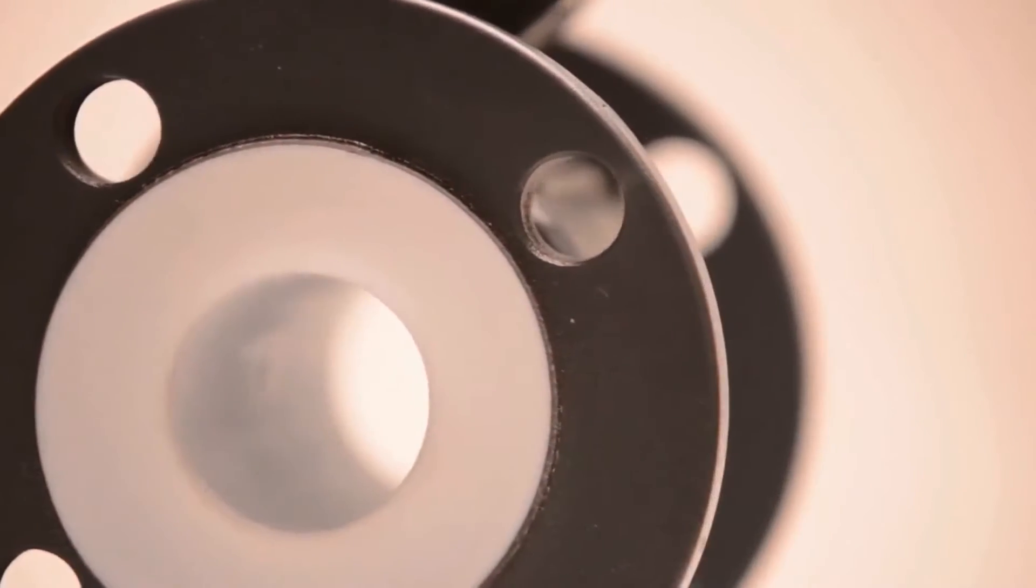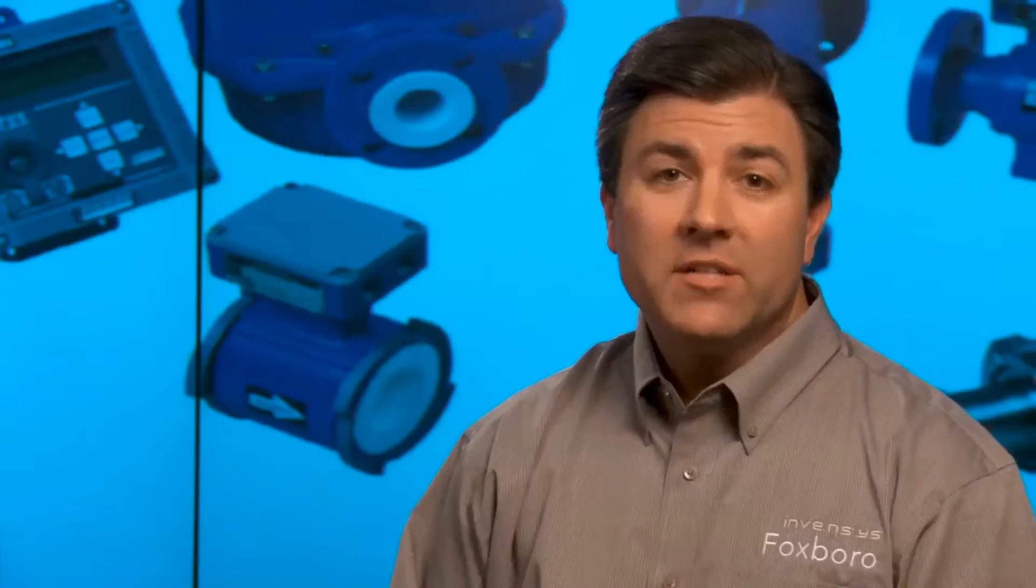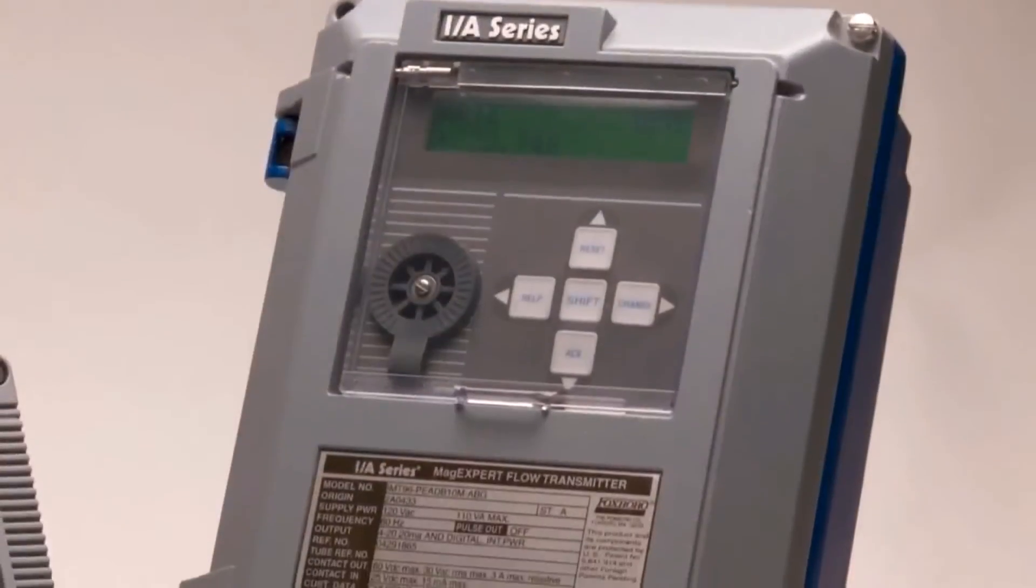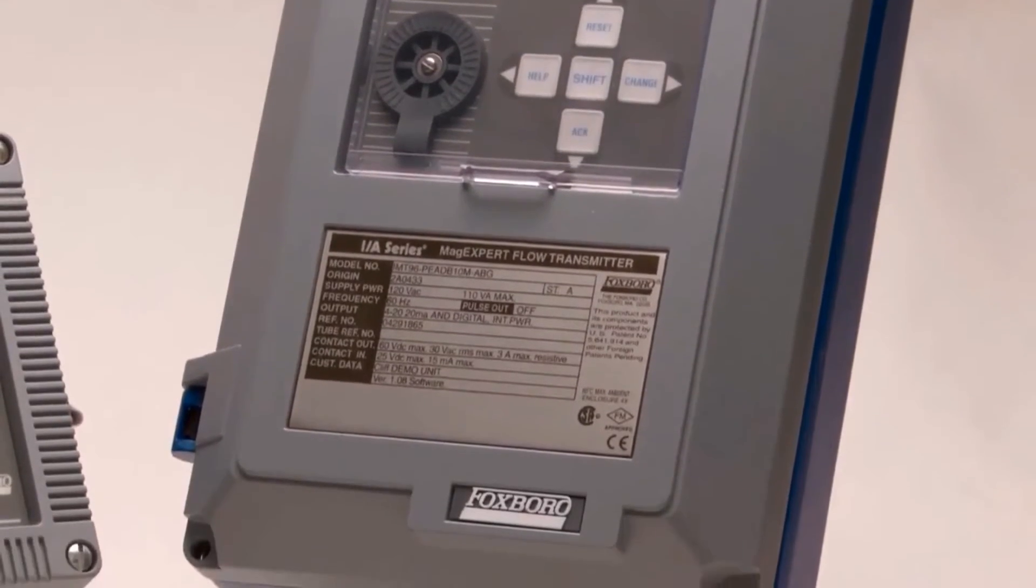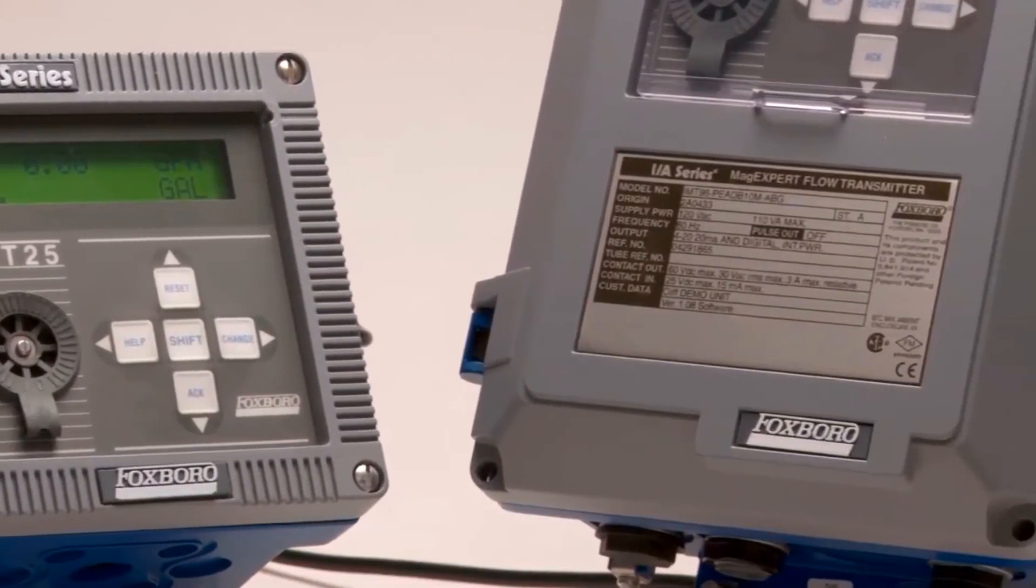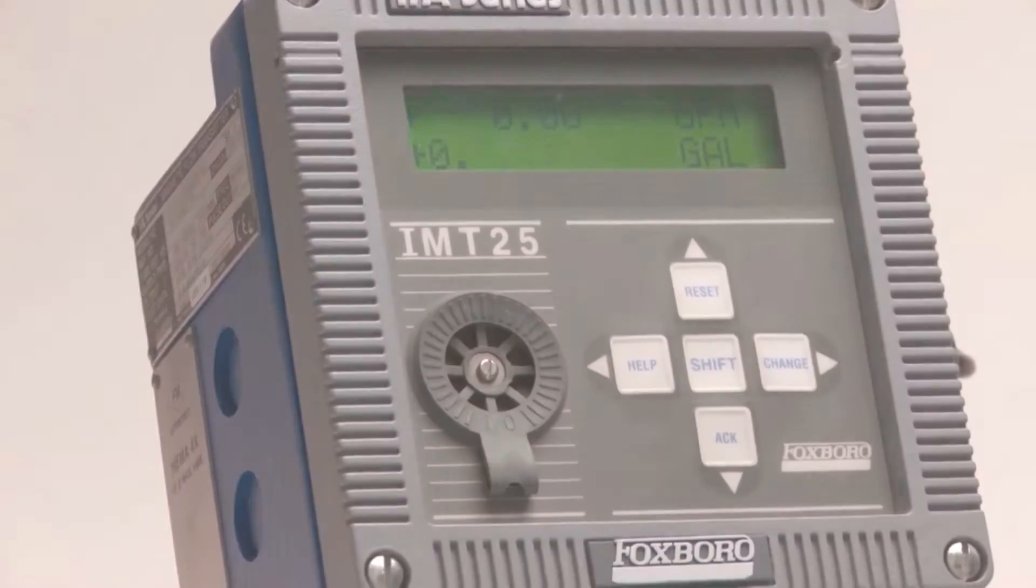Our MAD flow meters offer a system accuracy of plus or minus 0.25% of reading. FoxPro Flow Tubes can be paired with our IMT25 and IMT96 transmitters for a complete compact system that provides unequaled durability, measurement accuracy, and performance with virtually no maintenance and minimal replacement costs covering the widest choice of industry applications available.